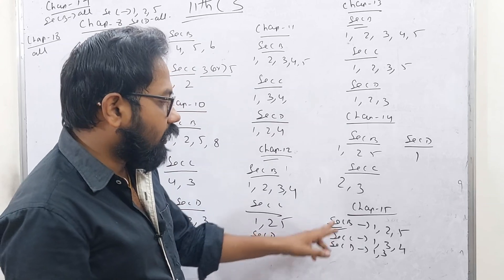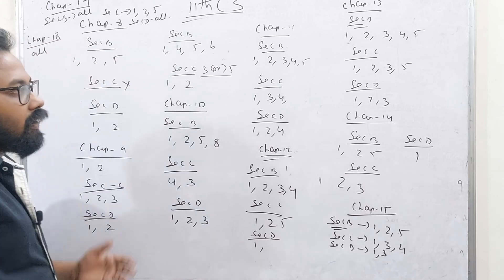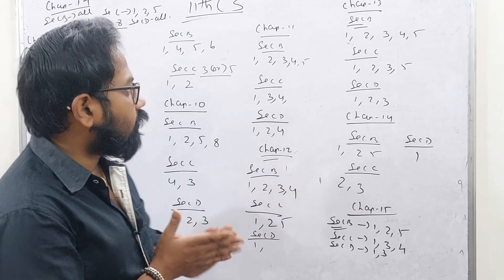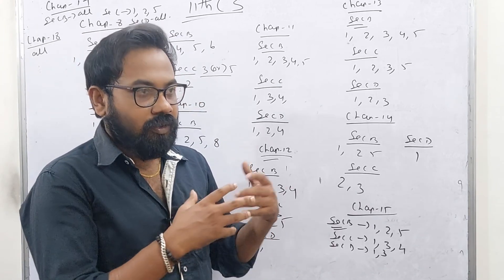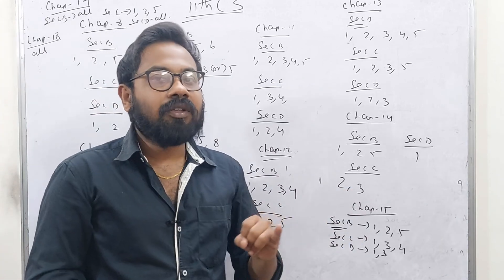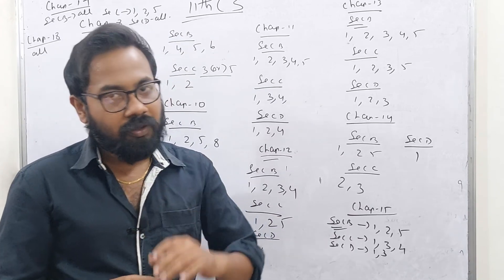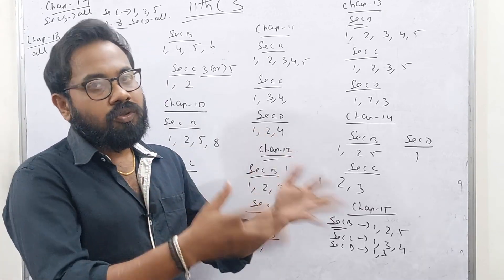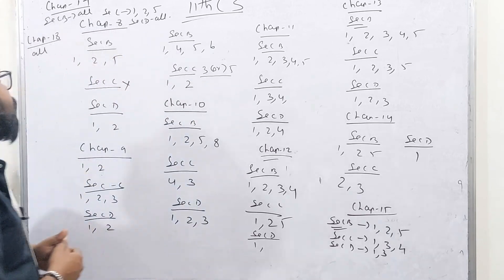Chapter 15 is more. Section B: 1, 2, 5. Section C: 1, 3, 4. Section D: 1, 3. It's function overloading and operator overloading — the rules are very different. There are important definitions: what is polymorphism, encapsulation, what is class. In Chapter 16, you can do types of inheritance. What is derived class, what is base class — that's all.